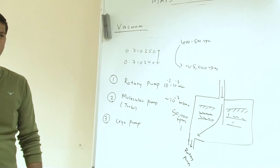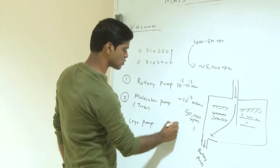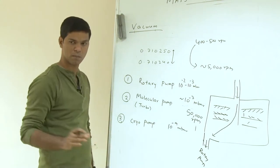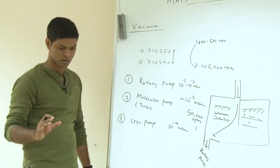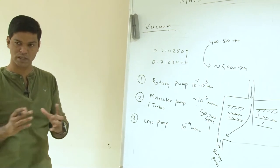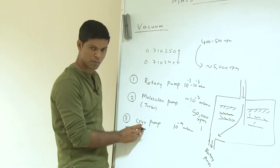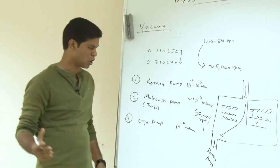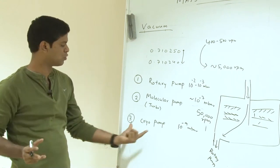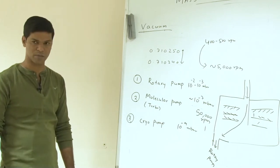Sometimes you want to go to a range of 10⁻⁹ millibar. In that case, you put some liquid nitrogen or a particular liquid that can trap most of the other constituents in the chamber. Through this cryo pump, other gases will come and stick to it, so you lose those gases, and the vacuum can be brought down to 10⁻⁹ millibar.